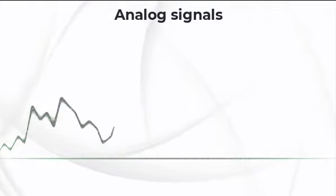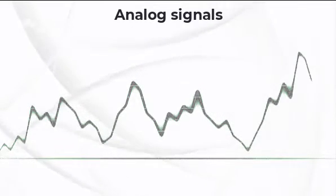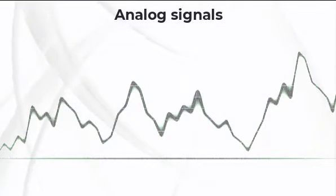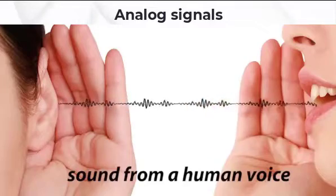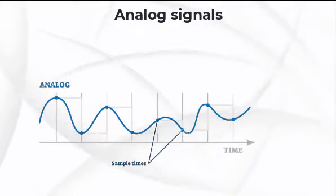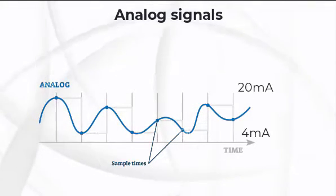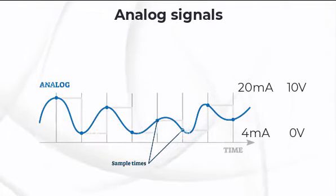Analog signals. An analog signal is any continuous signal that's value changes over time. For example, in an analog audio signal, the instantaneous voltage of the signal varies continuously with the pressure of the sound waves. The values of the analog signals are usually 4 mA to 20 mA or sometimes 0 to 10 volts.